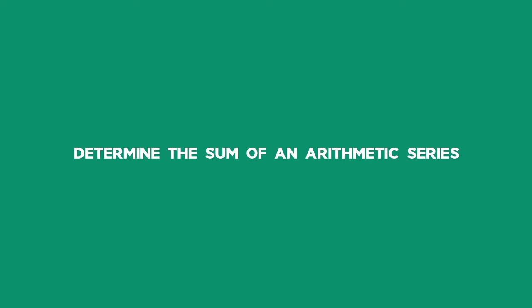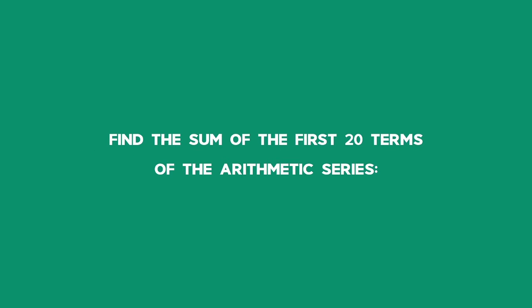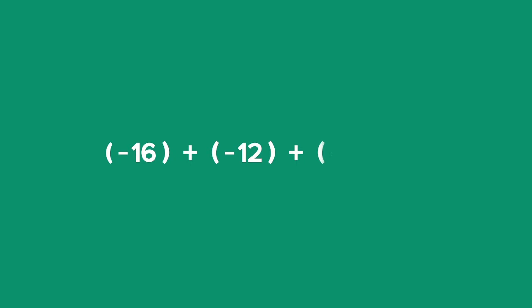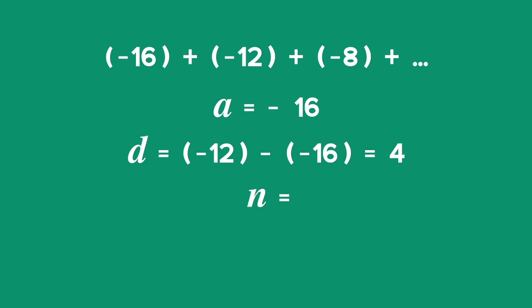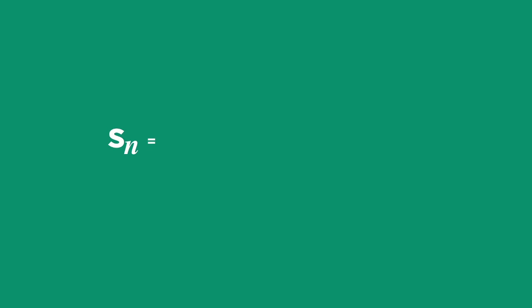Example 1: Determine the sum of an arithmetic series. Find the sum of the first 20 terms of the arithmetic series: negative 16 plus negative 12 plus negative 8, and so on. Solution: A equals negative 16, D equals negative 12 minus negative 16 which equals 4, and n equals 20. We use the formula Sn is equal to half n into 2A plus the result of n minus 1 multiplied by D, as we have not been given the last term of the sequence.